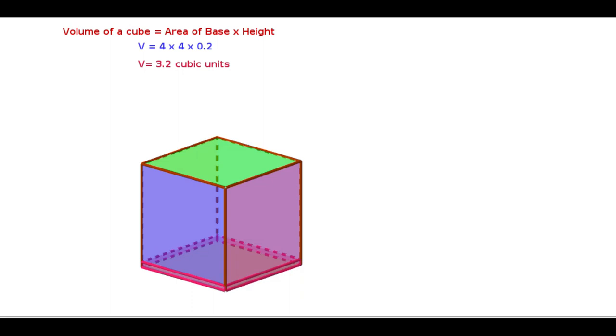Here, the base is a square and its area is a². Since all the edges are equal to a, the area of the base times height means a² times a, that is a³, and its unit is cubic units.